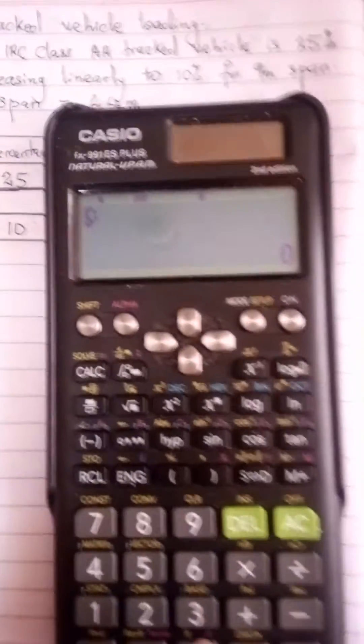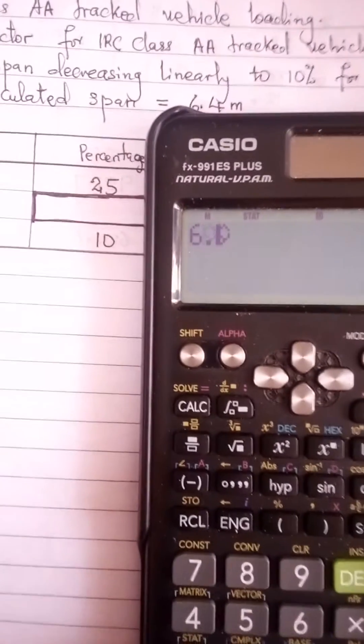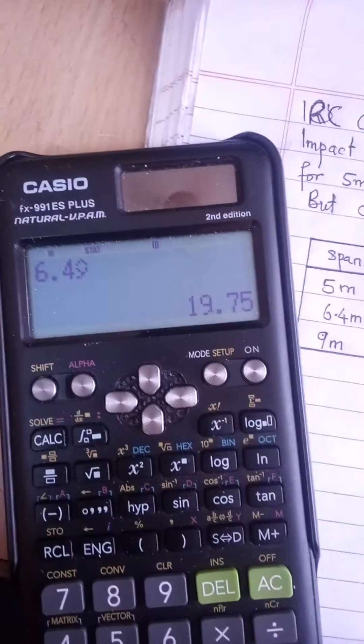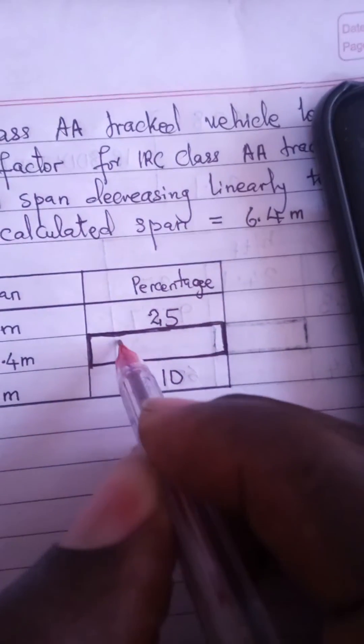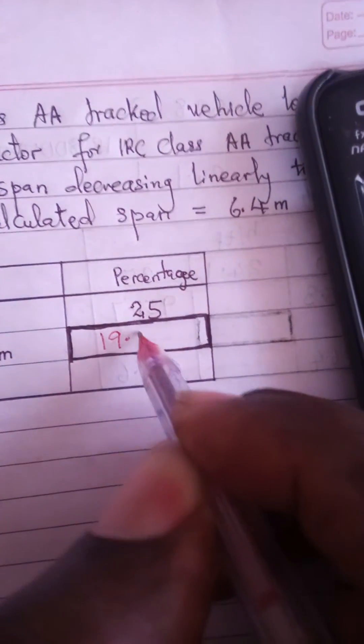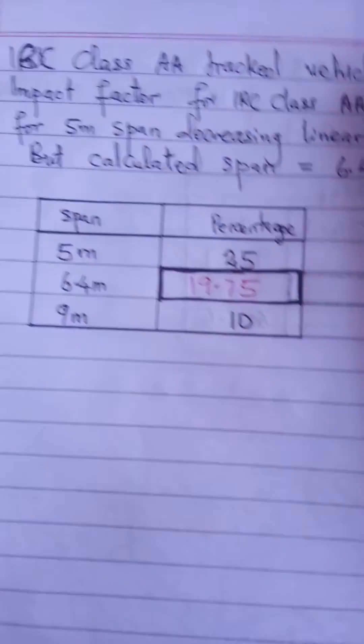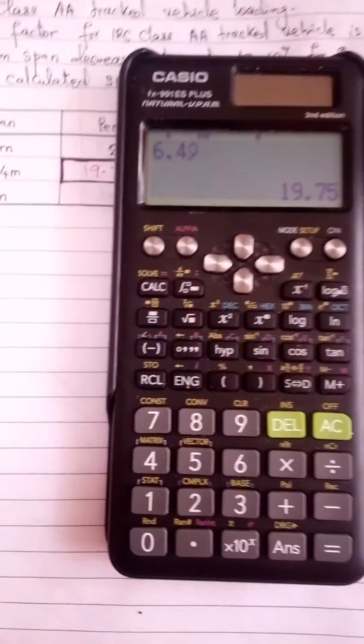When you move that cursor leftward, you now type 6.4 and press equal to. The answer comes out to be 19.75, so I will write here 19.75. So that is the percentage that I am looking for.